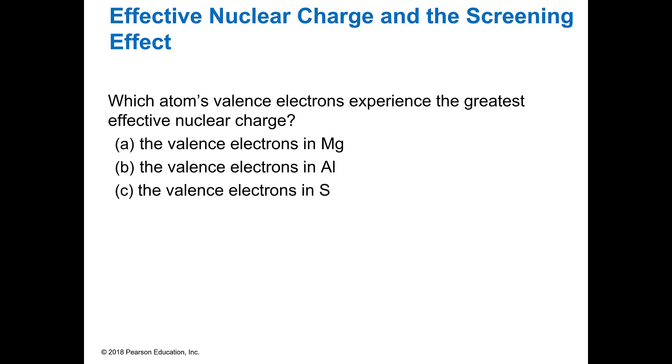So which atoms valence electrons experience the greatest effective nuclear charge? The valence electrons in magnesium, aluminum, or sulfur. If you look at the periodic table and see which one is the farthest to the right and highest, you're going to see that sulfur is, because they're all in the same row, but sulfur is the one that's farthest right. And so since effective nuclear charge is one of the triple E's which are high and right, then sulfur will be the greatest.